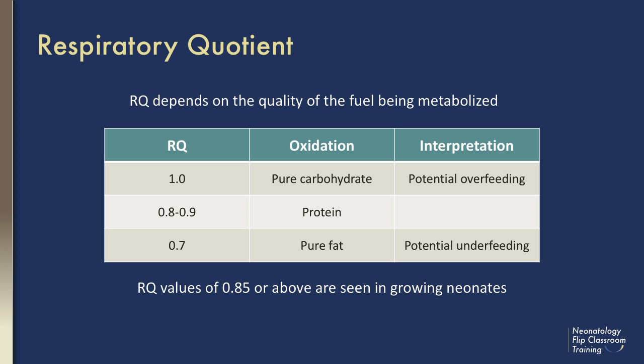The respiratory quotient depends on the quality of the fuel being metabolized. The RQ for most forms of energy used by neonates ranges from 0.7 to 1. In general, molecules that are more oxidized, such as glucose, require less oxygen to be fully metabolized and therefore have higher respiratory quotients. Conversely, molecules that are less oxidized, such as fatty acids, require more oxygen for their complete metabolism and have lower respiratory quotients.